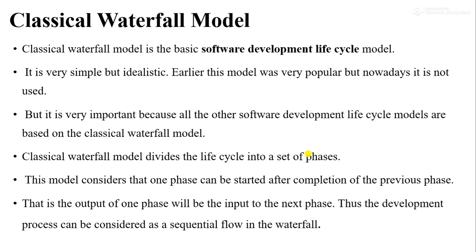It is very simple but idealistic. Earlier this model was very popular, but nowadays it is not in use. However, the classical waterfall model still has its own importance because all other software development life cycle models are derived from it. This model divides the entire life cycle into a set of phases, and considers that one phase can start only after completion of the previous phase — the output of one phase will be the input for the next phase. Thus the development process can be considered as a sequential flow.